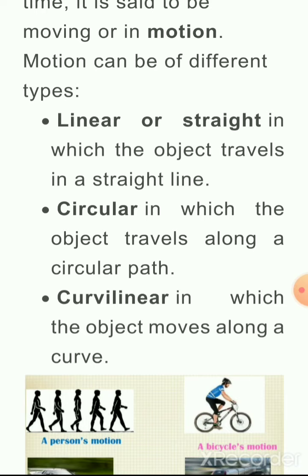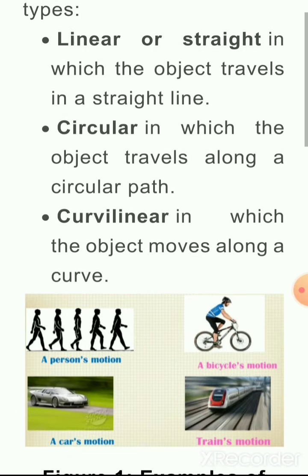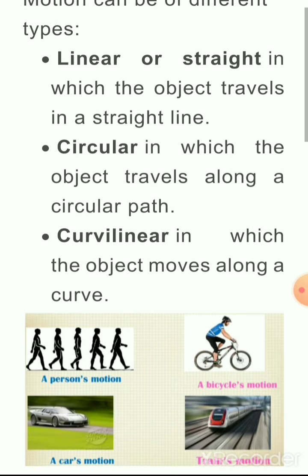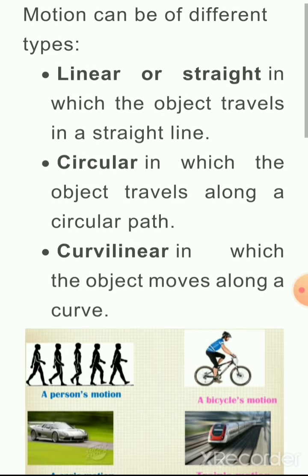Circular motion: the object travels along a circular path. जब कोई object circular path पे, यानि कि गोल गोल — कोई circle है, उसके चारों ओर वो गोल गोल travel करे, उसमें movement करे, तो वो circular path travelling कहलाएगा।